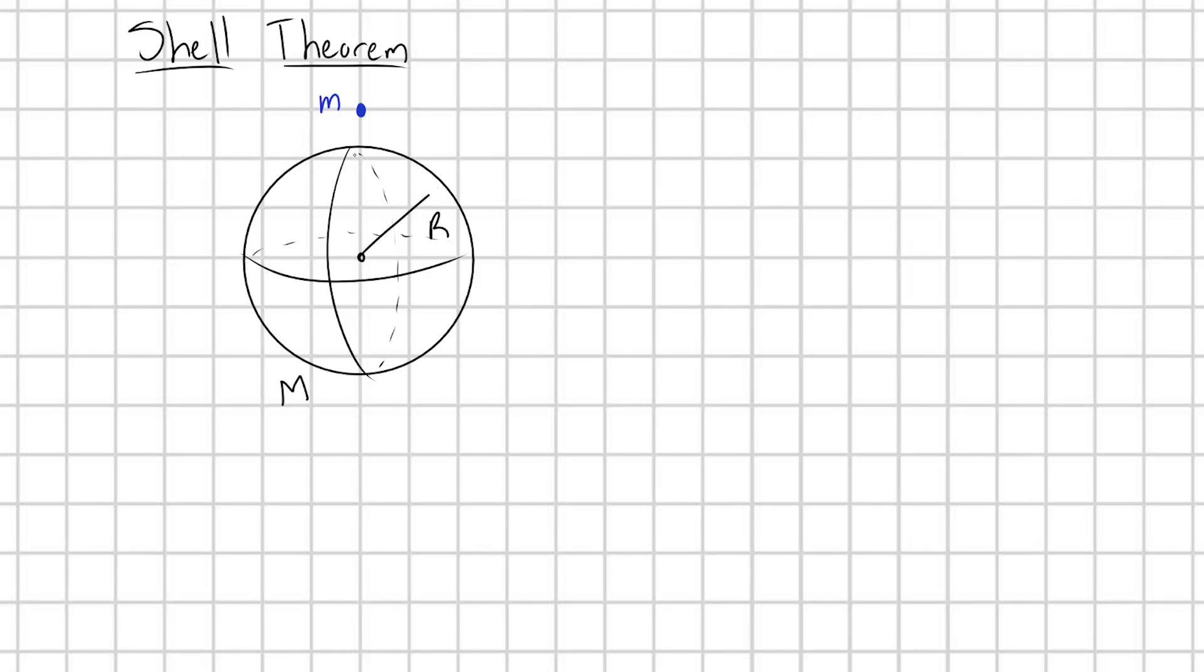Let's say we have a shell of mass capital M and a little mass above it labeled little m. Little m is some distance little r from the center of the shell. We can break the shell into a bunch of little infinitesimal masses dm, and I'm going to point from each dm to my little mass m with a script vector r.